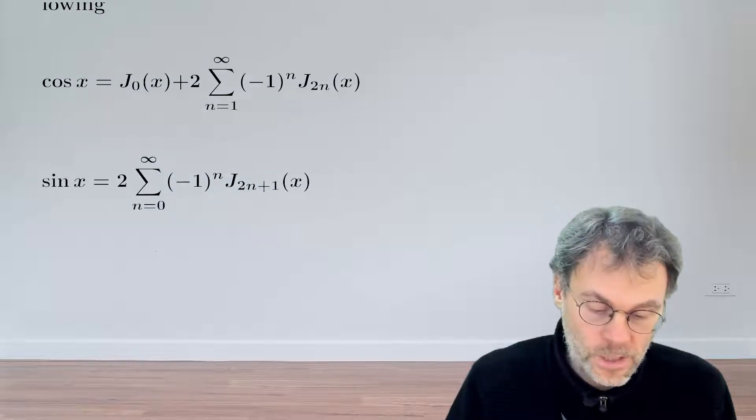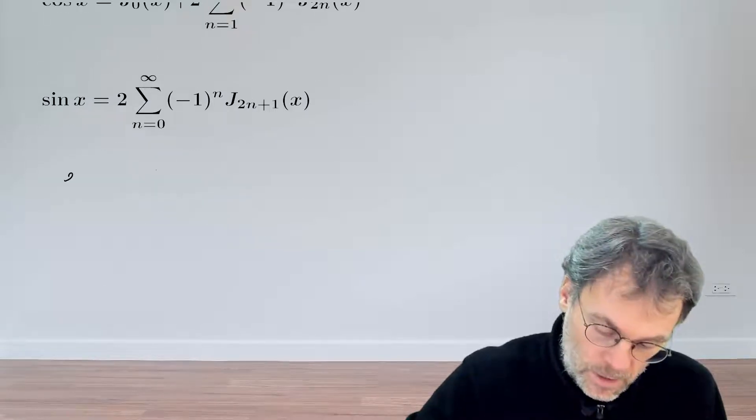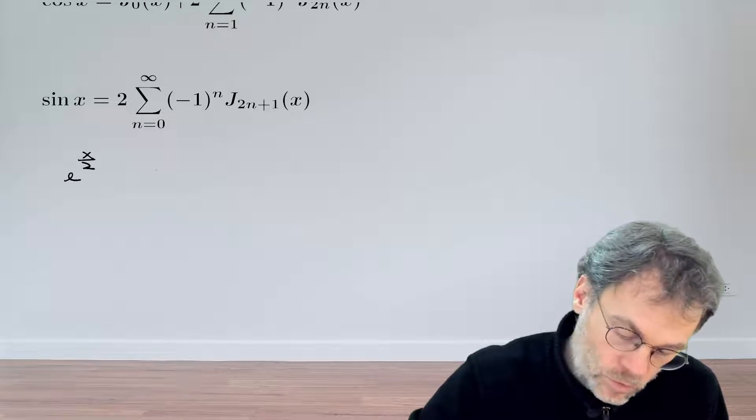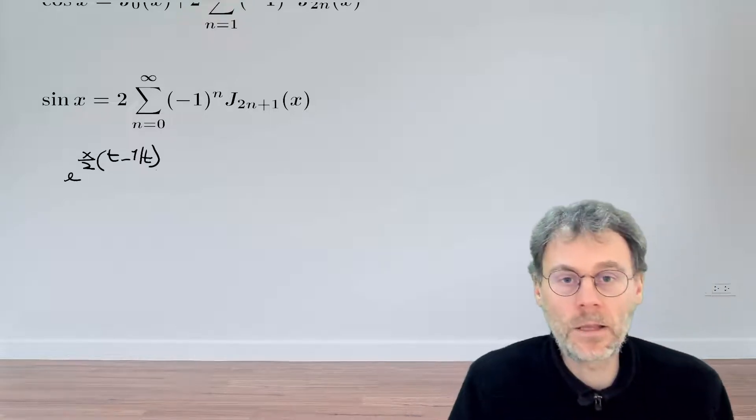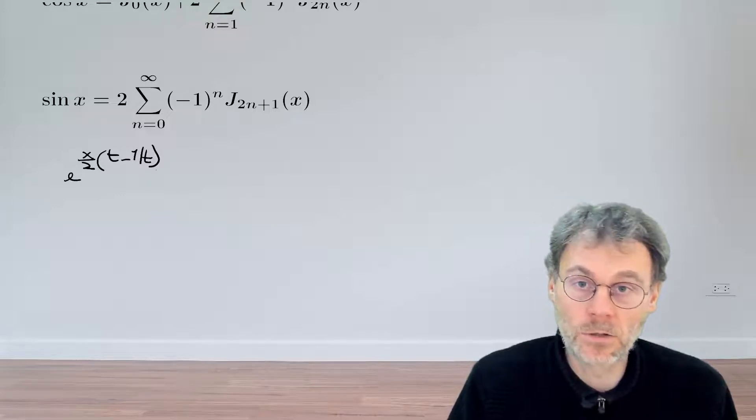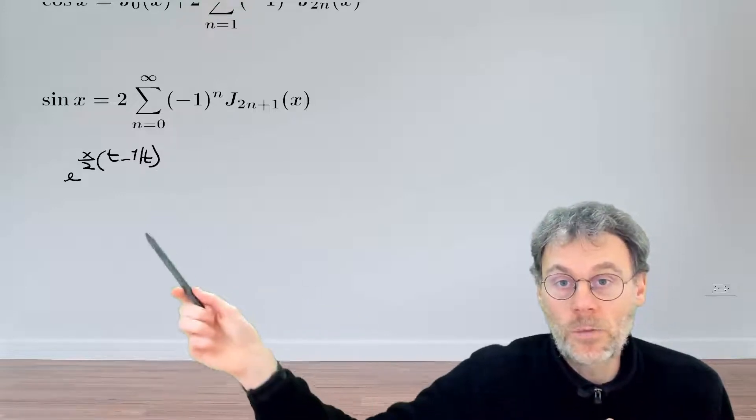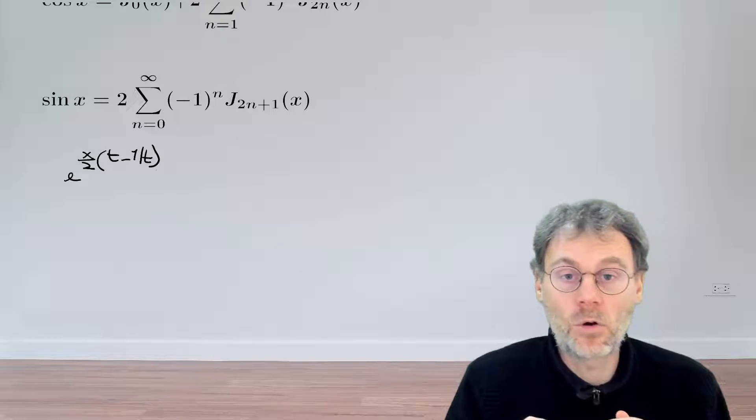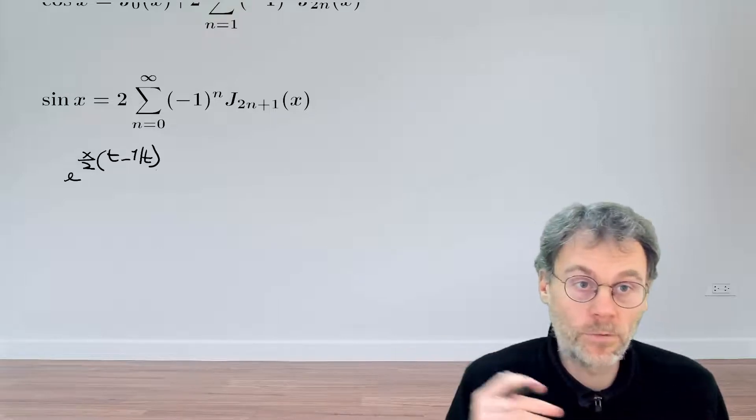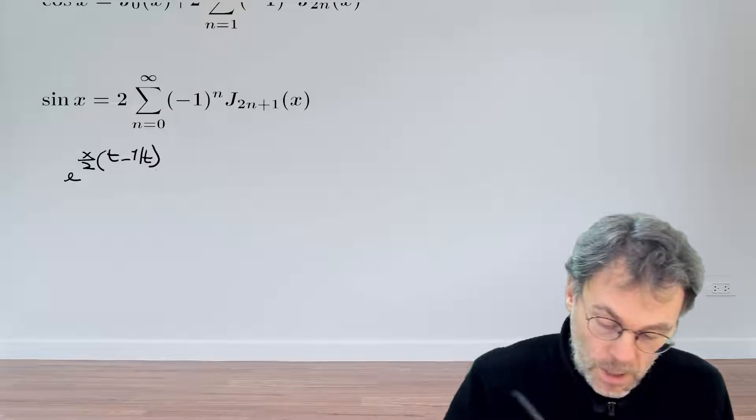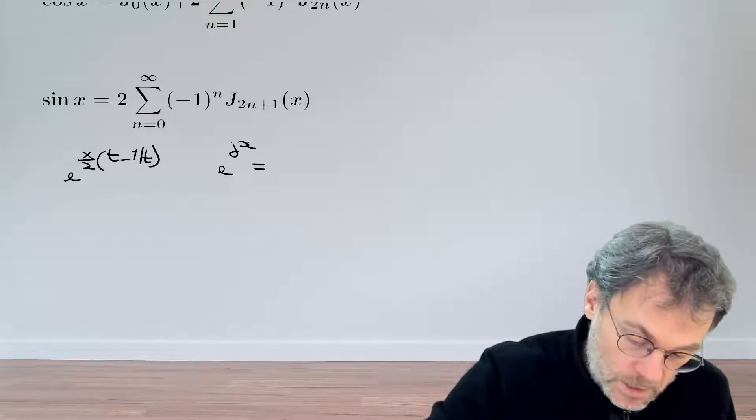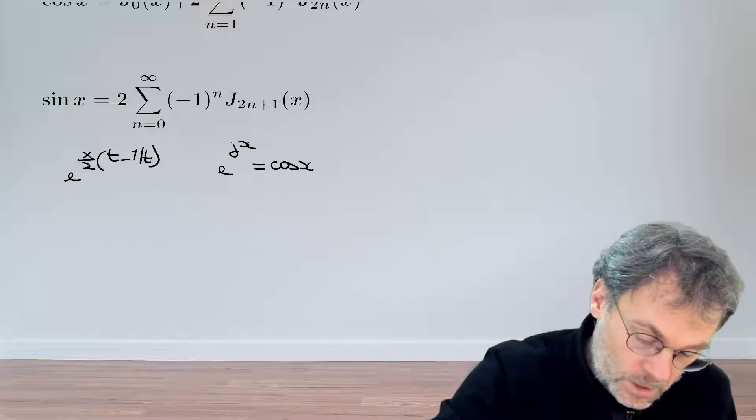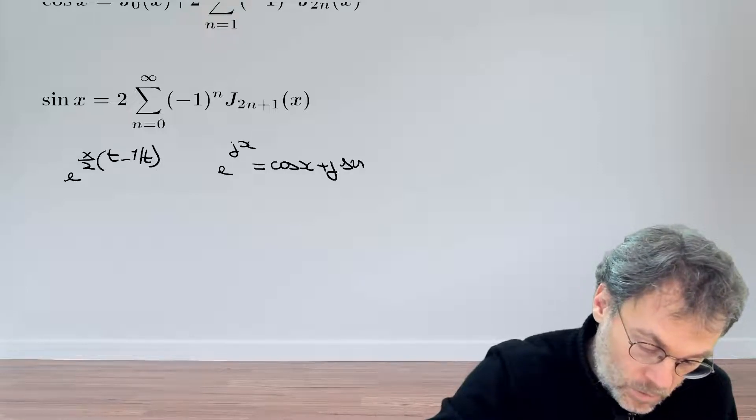Our generating function looks as follows: exponential x over 2 times (t minus 1 over t). We need to show something about sines and cosines. What's the relationship between sines and cosines and exponentials? Well, obviously our friend Euler tells us that exponential jx is equal to cosine of x plus j sine of x.